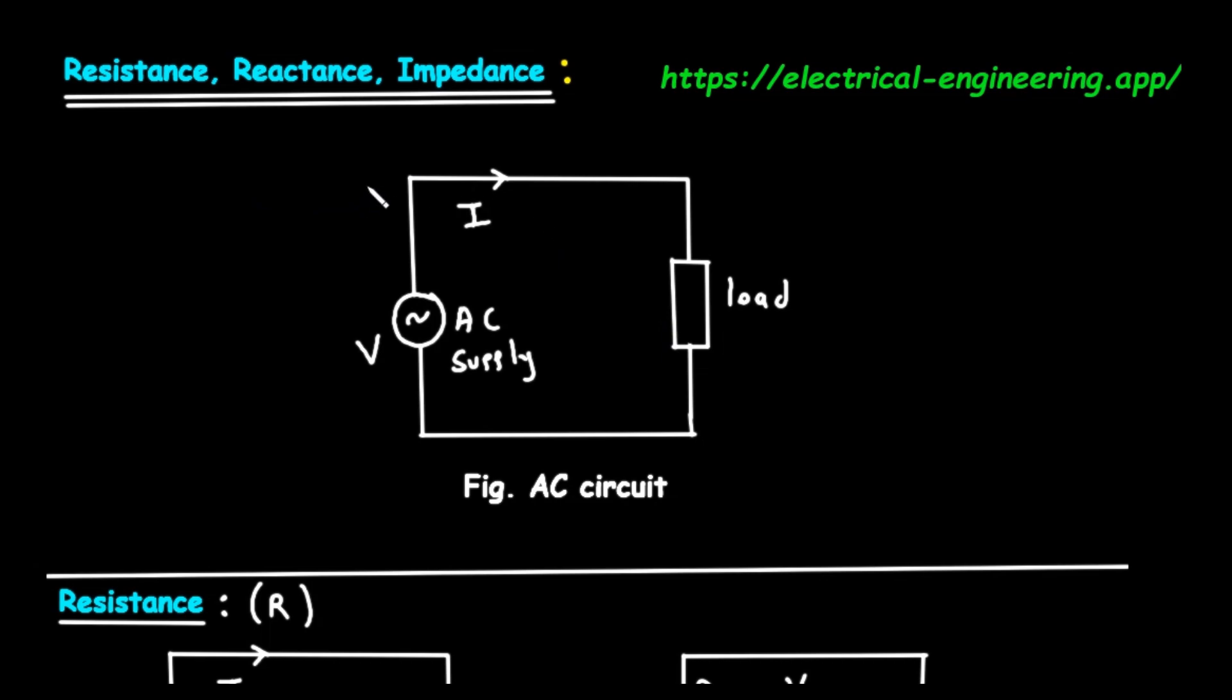Hello and welcome. Today, we're going to explore three fundamental concepts in alternating current, or AC, circuits: resistance, reactance, and impedance. By the end of this, you'll have a clear understanding of what each term means and how they all work together.